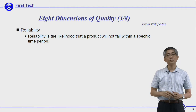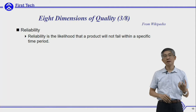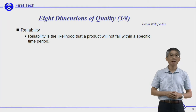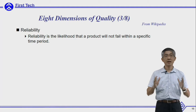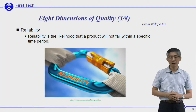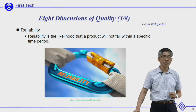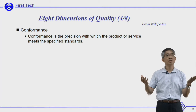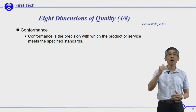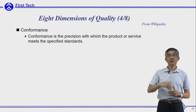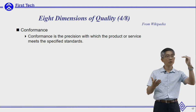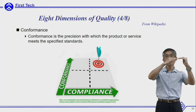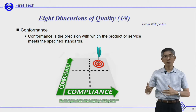The third dimension is reliability — the likelihood that a product will not fail within a specific time period, which is its life cycle. Reliability is a very important quality dimension. The next is conformance: the precision with which a product or service meets specified standards. Your performance listed in the catalog should be consistently delivered throughout the product life cycle and across your entire product line.